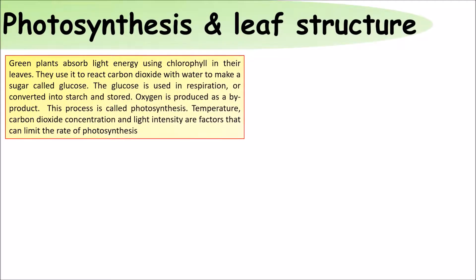Green plants absorb light energy using chlorophyll in their leaves. They use it to react carbon dioxide and water together to make glucose. Glucose is used in respiration or converted into starch to be stored. Oxygen is produced as a by-product. This process is called photosynthesis.